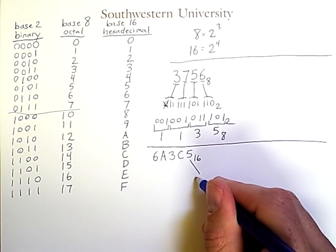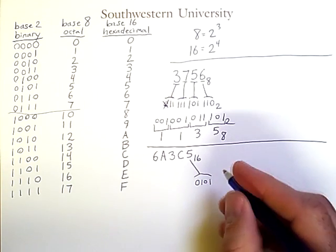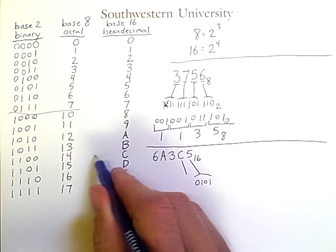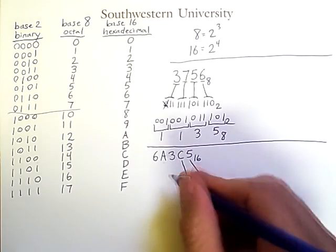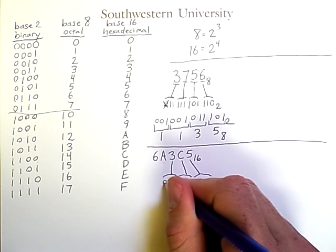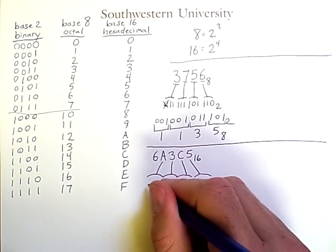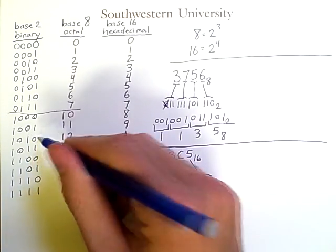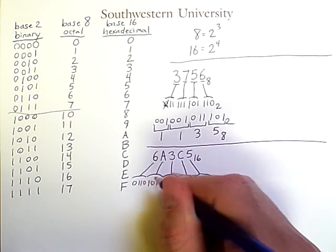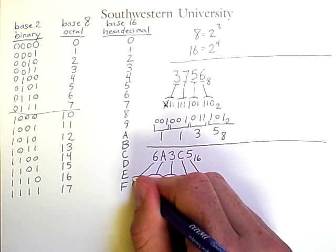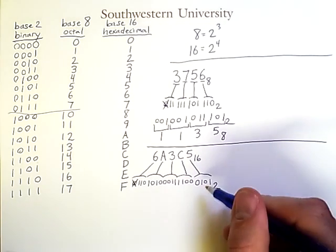So 5 is the 4-bit sequence 0101. C is the 4-bit sequence 1100. 3 is the 4-bit sequence 0011. A is the 4-bit sequence 1010. And 6 is the 4-bit sequence 0110. We can eliminate any padding zeros on the left-hand side of the left-most number, and this is the binary or base 2 equivalent of this hexadecimal number.